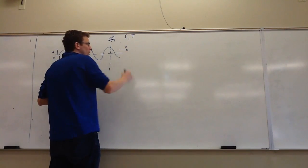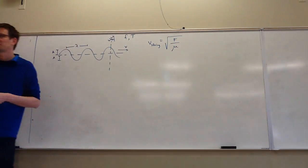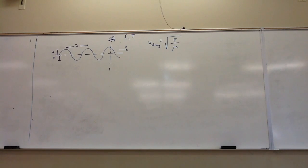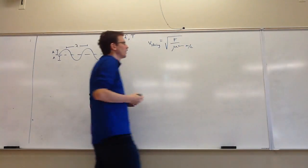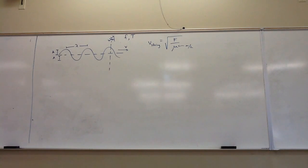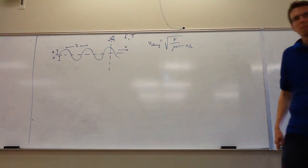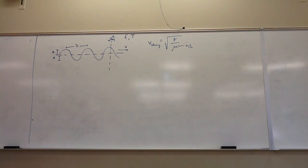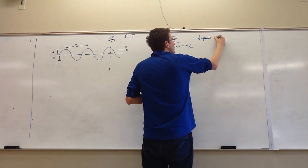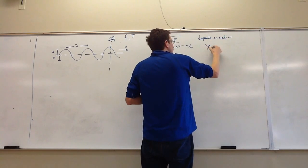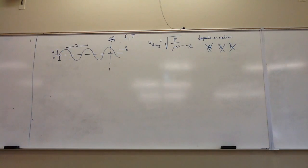At the end of last time we talked about wave speed, which for a wave on a string depends on the tension in the string and the mass per length — the linear mass density. The key point is that wave speed only depends on the medium, the stuff the wave travels on. It does not depend on the amplitude, wavelength, or frequency of the wave. None of the wave properties matter — what matters is the stuff it's traveling on.